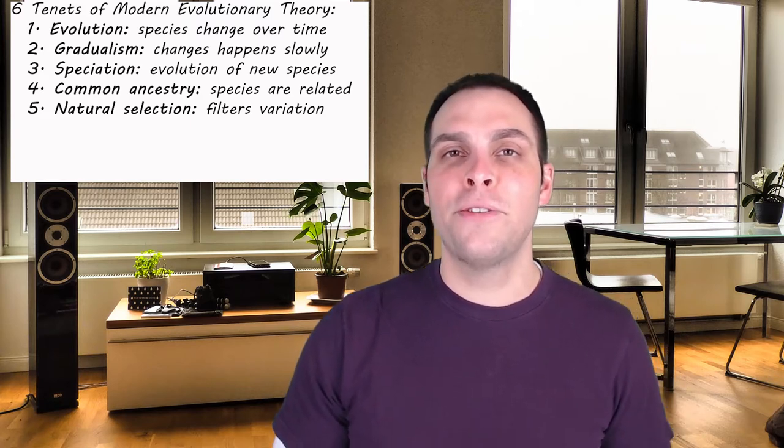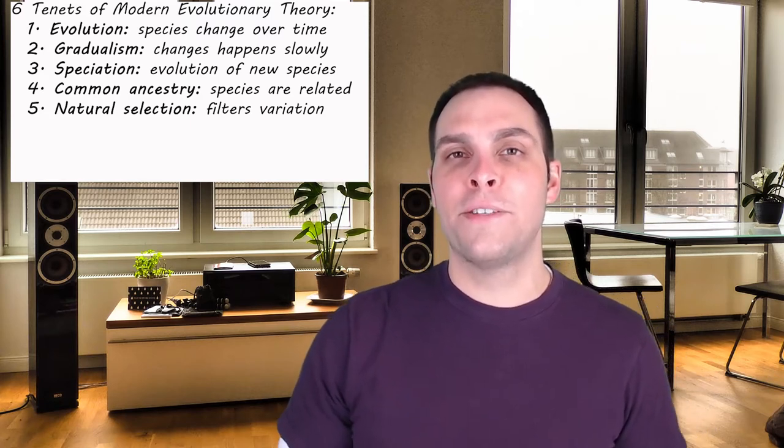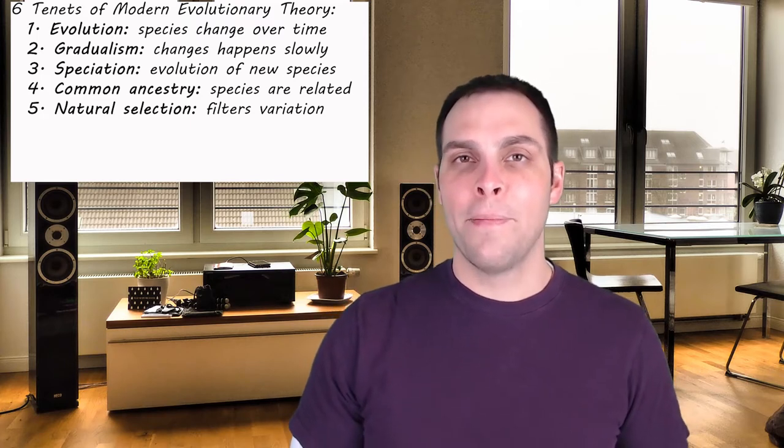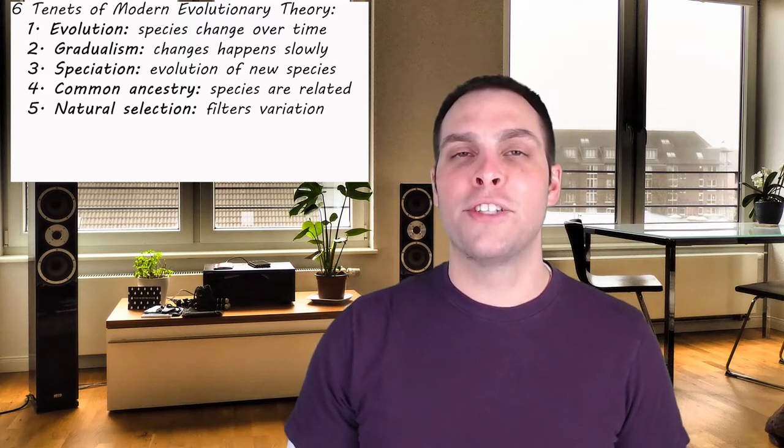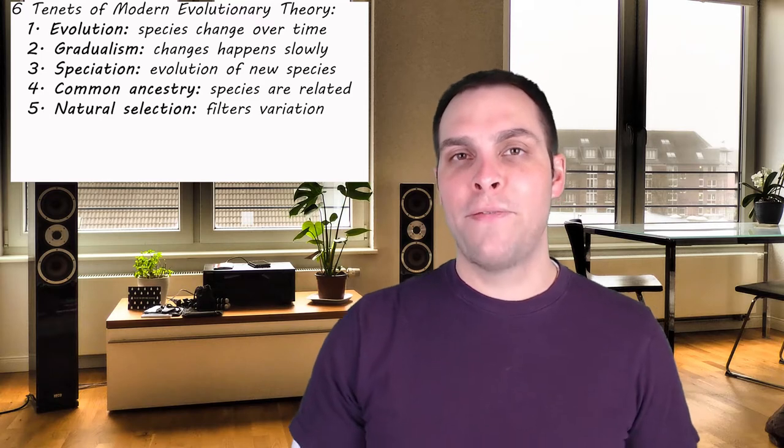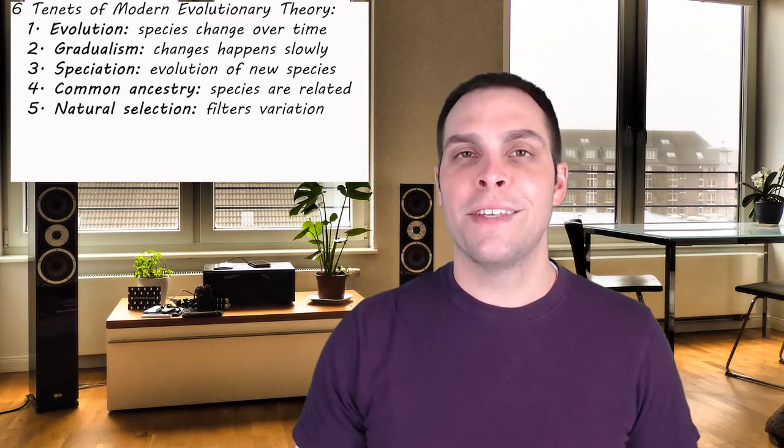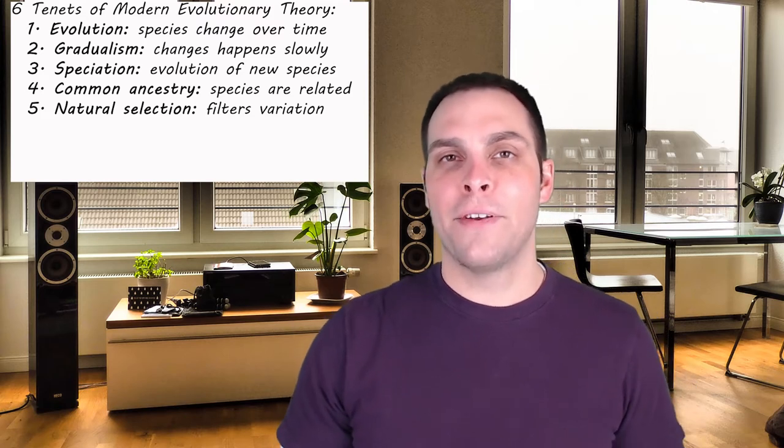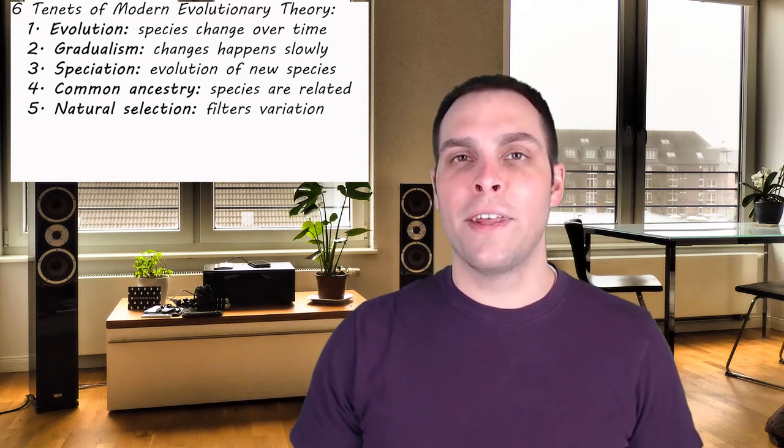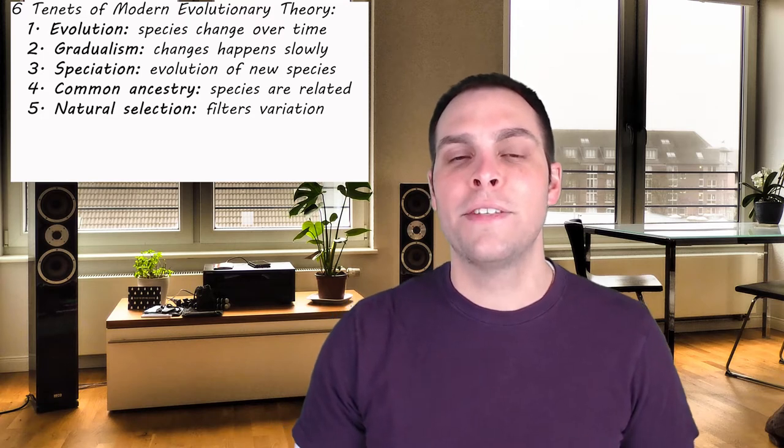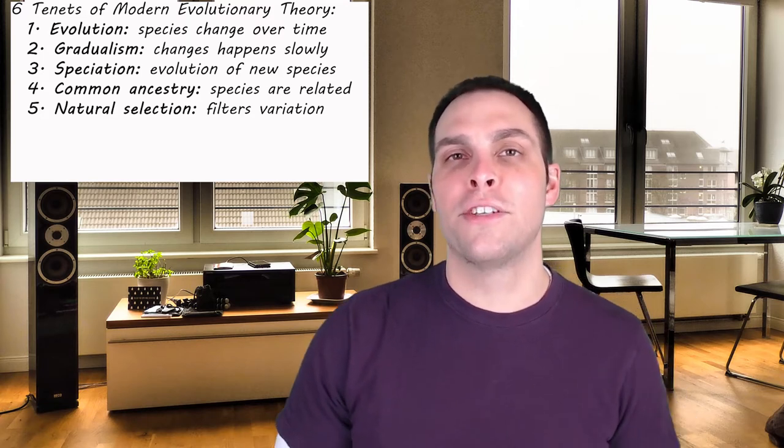But natural selection describes a materialistic process in which speciation can occur. Simply put, natural selection states that the forces acting on species over time gradually select for those variations within a species that are beneficial and removing those variations within a species that are less beneficial. This accumulation of beneficial traits allows changes to occur in species and over time if enough of those changes occur we end up with speciation.